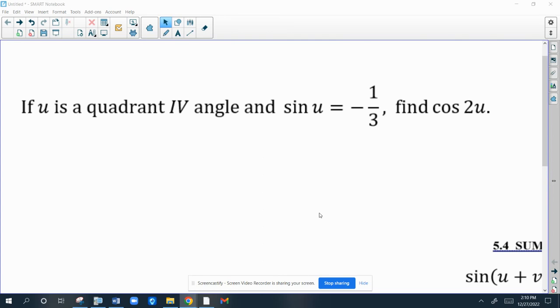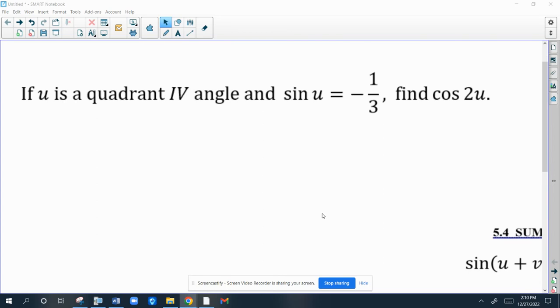Now we're going to use a double angle formula. We're given this angle u, it's in quadrant 4, and the sine of that angle is negative 1 third. We're going to find out what the cosine of twice that angle is.